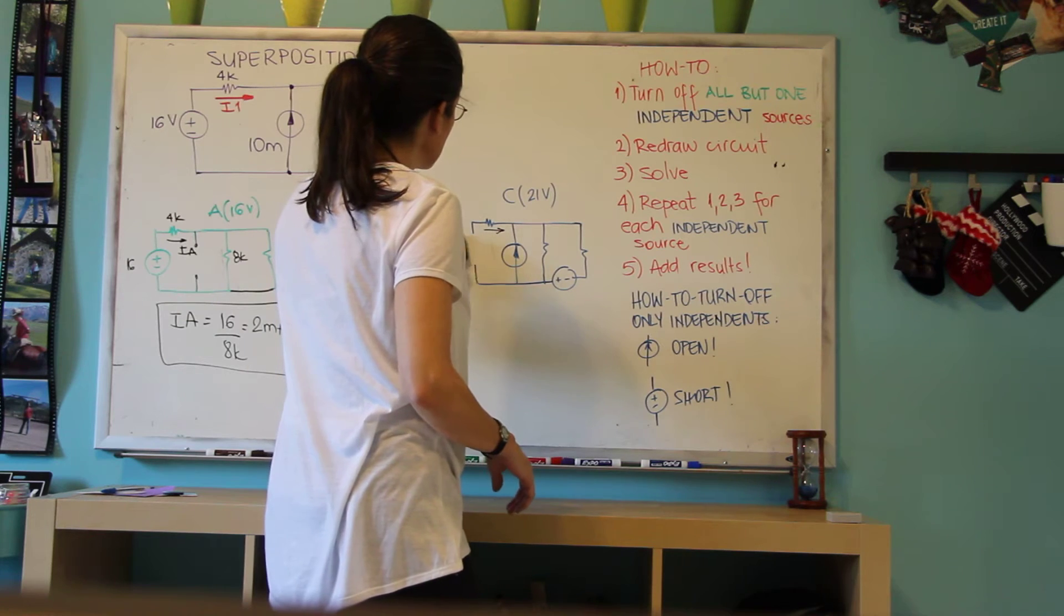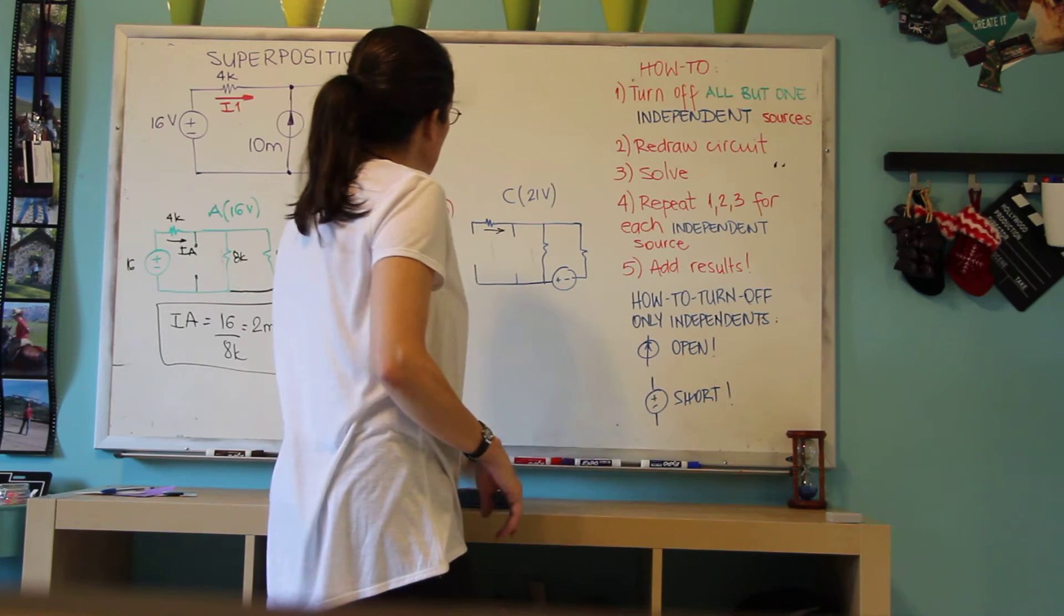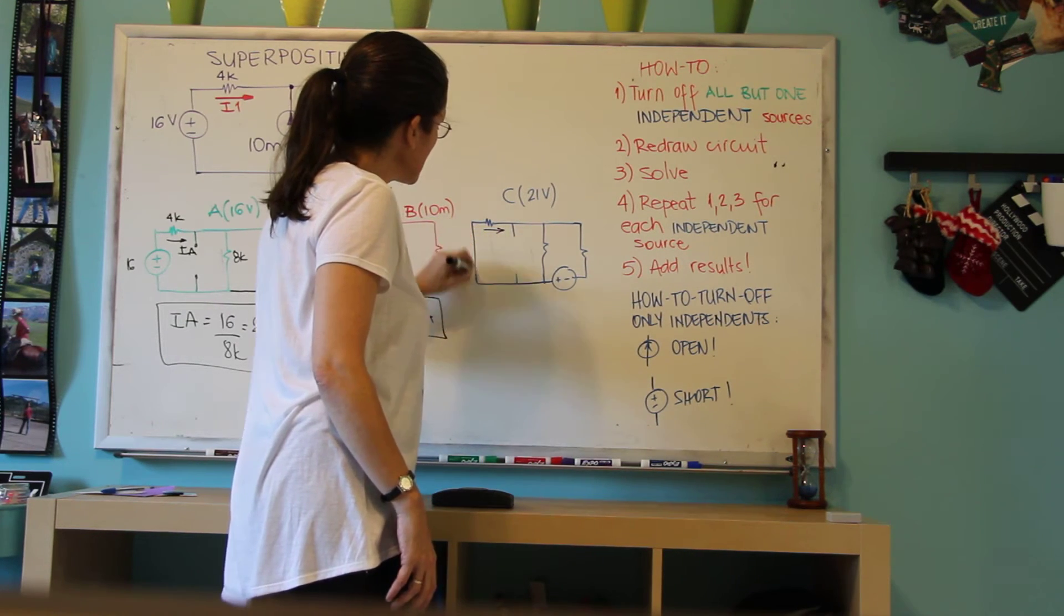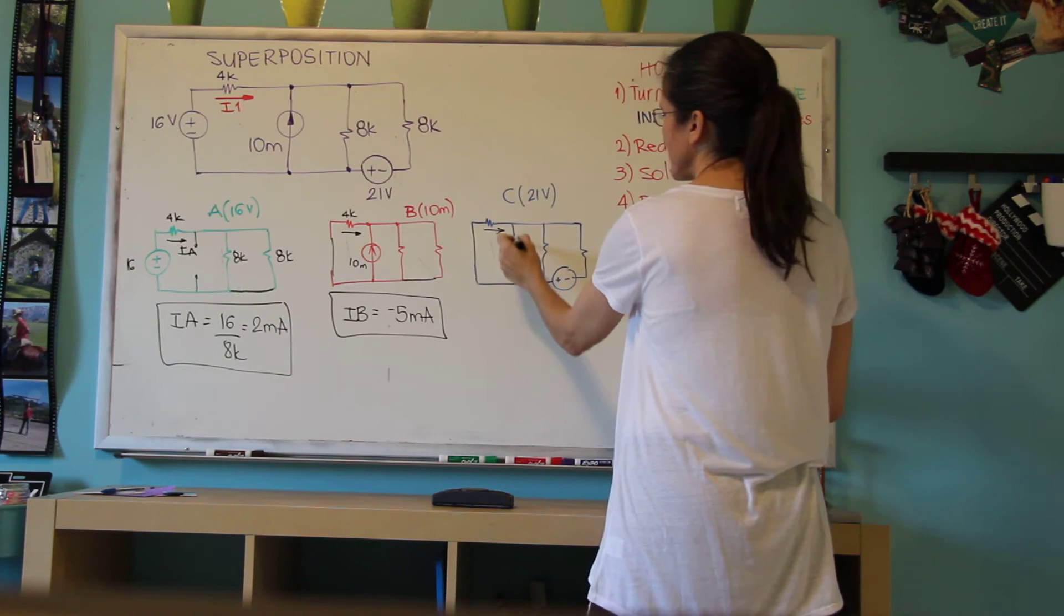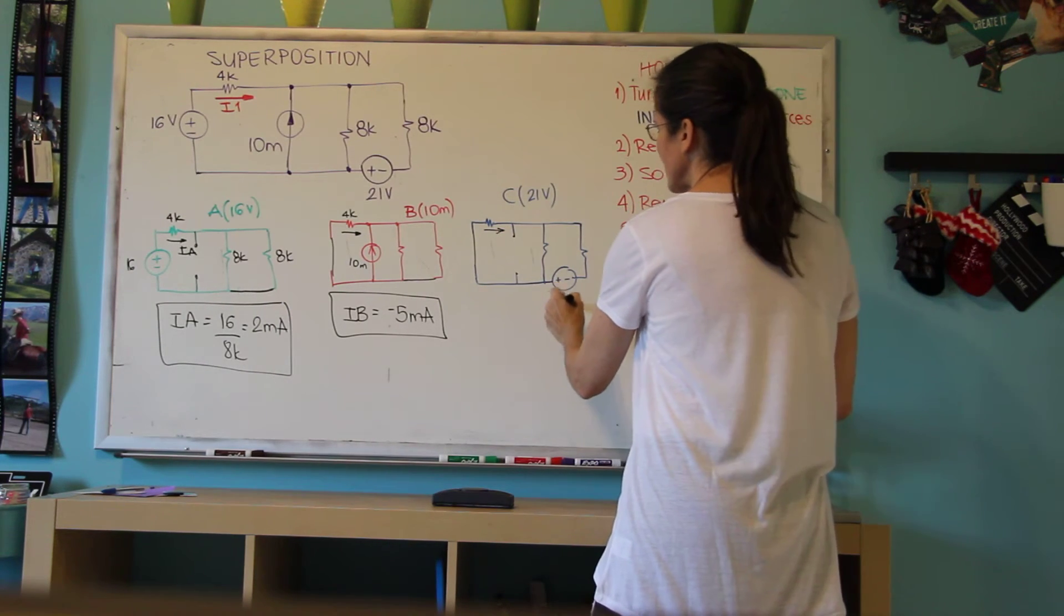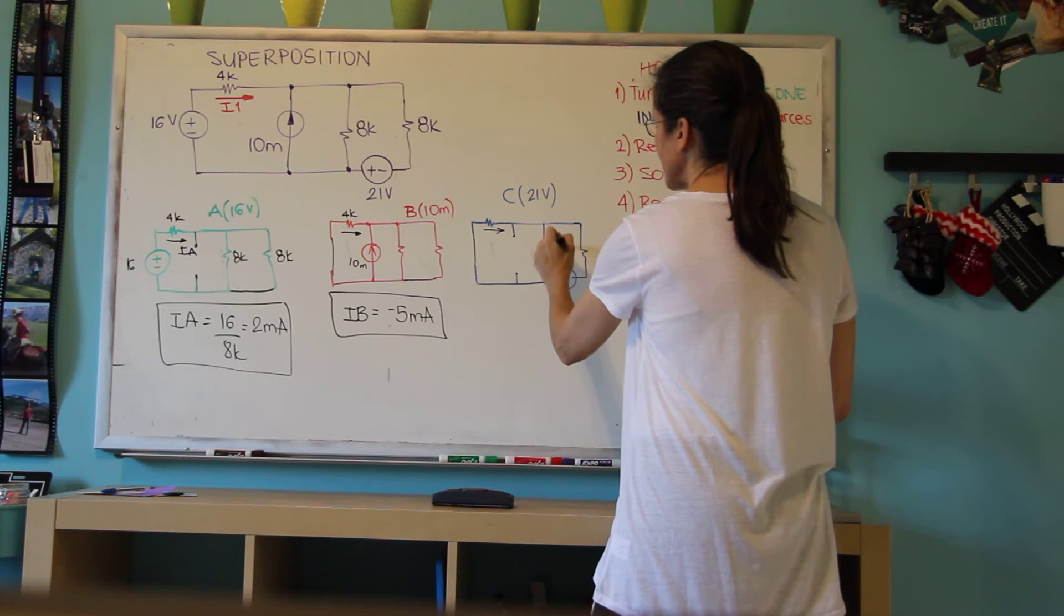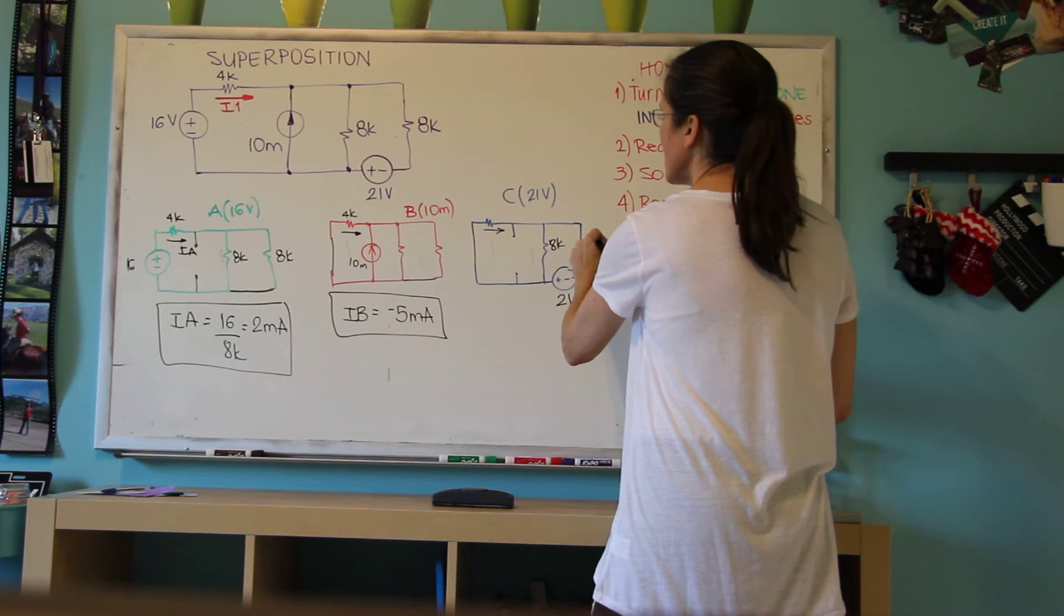Finally, I'm going to leave the 21 volt there by shorting the 16 and opening the 10 milli. And now this is 21, this is 8K, 8K.